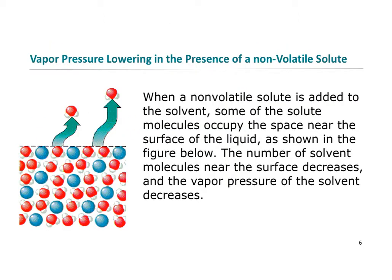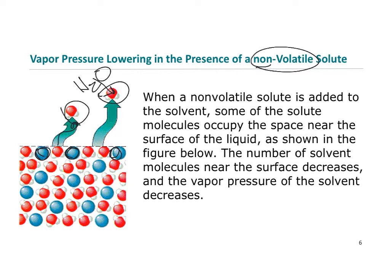The reason a non-volatile solute lowers the vapor pressure of a solution is that the solute molecules — the blue spheres here — simply block the way for solvent molecules to escape into the vapor phase. To get into the vapor phase, molecules of any volatile liquid at the surface escape into the gas phase at some rate. If you have non-volatile things that don't vaporize easily blocking some of them, that rate of escape slows down, and so the overall vapor pressure is lower.